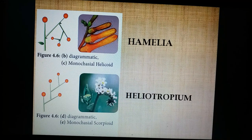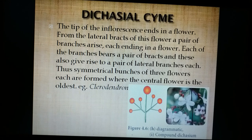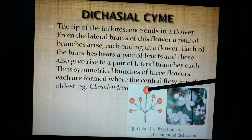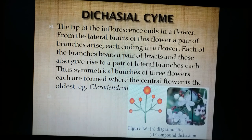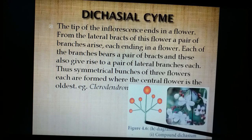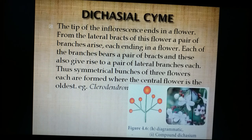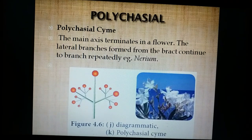Now the dichasial cymose inflorescence: when the peduncle terminates with a flower, always two branches develop. This is called dichasial cymose inflorescence, and the example is Clerodendron, Ipomoea, etc.